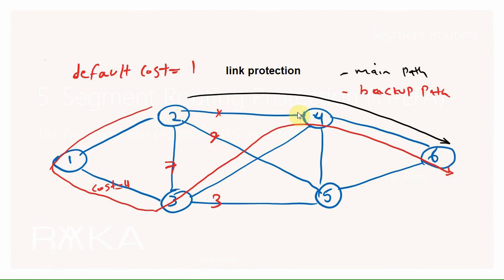For destination R6, the main path is R2→R4→R6, and the backup path is R2→R1→R3→R4→R6, which is the best path with the lowest metric after the main path. As you can see, the backup path excludes the protected link because it assumes that the protected link is failed when calculating the backup path. The backup path is pre-calculated and installed in the routing table before any failure. When the R2–R4 link fails, the backup path is already in the routing table and will be used immediately in less than 50 milliseconds.